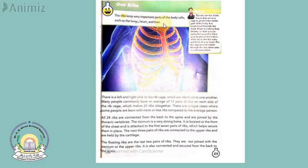The rib cage protects the heart, the lungs through which we breathe, and the liver which makes blood — all very important parts of our body. Our skeleton does not only give posture and flexibility to the body, it also protects the important parts of the body, just as the ribs protect the heart.